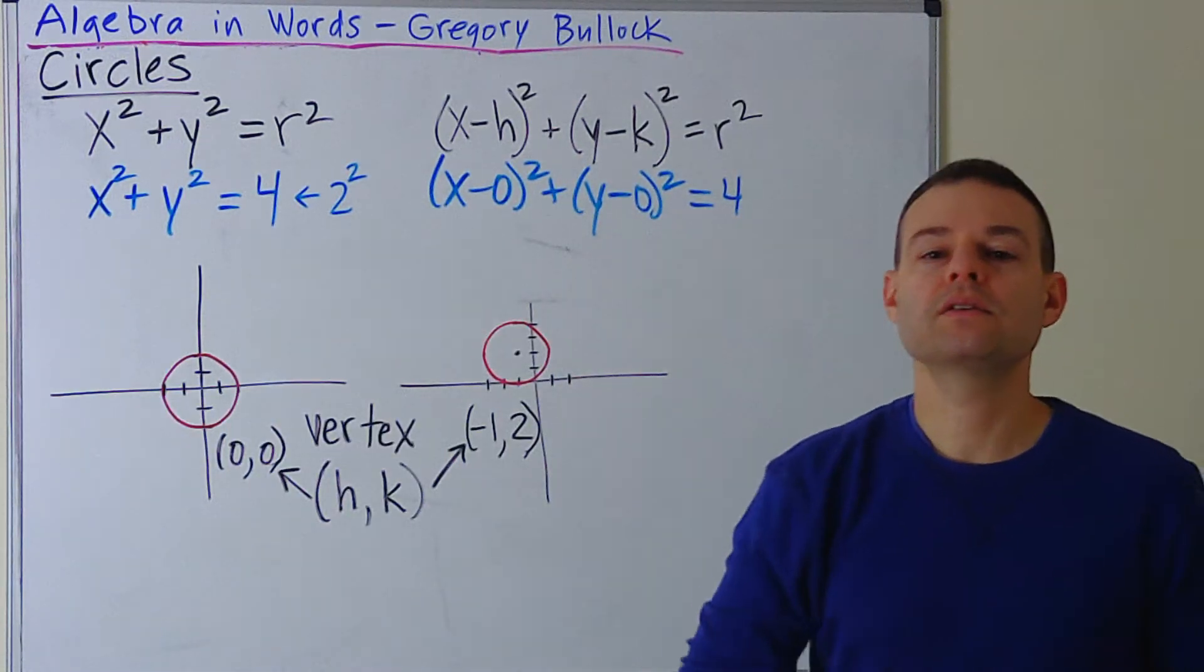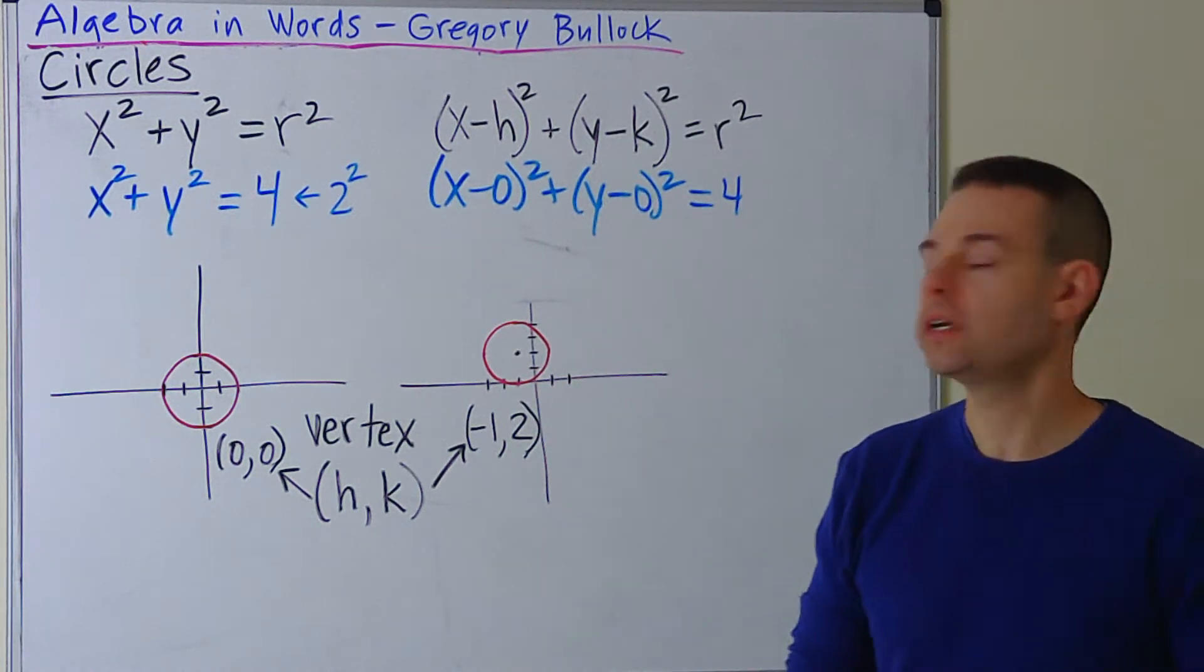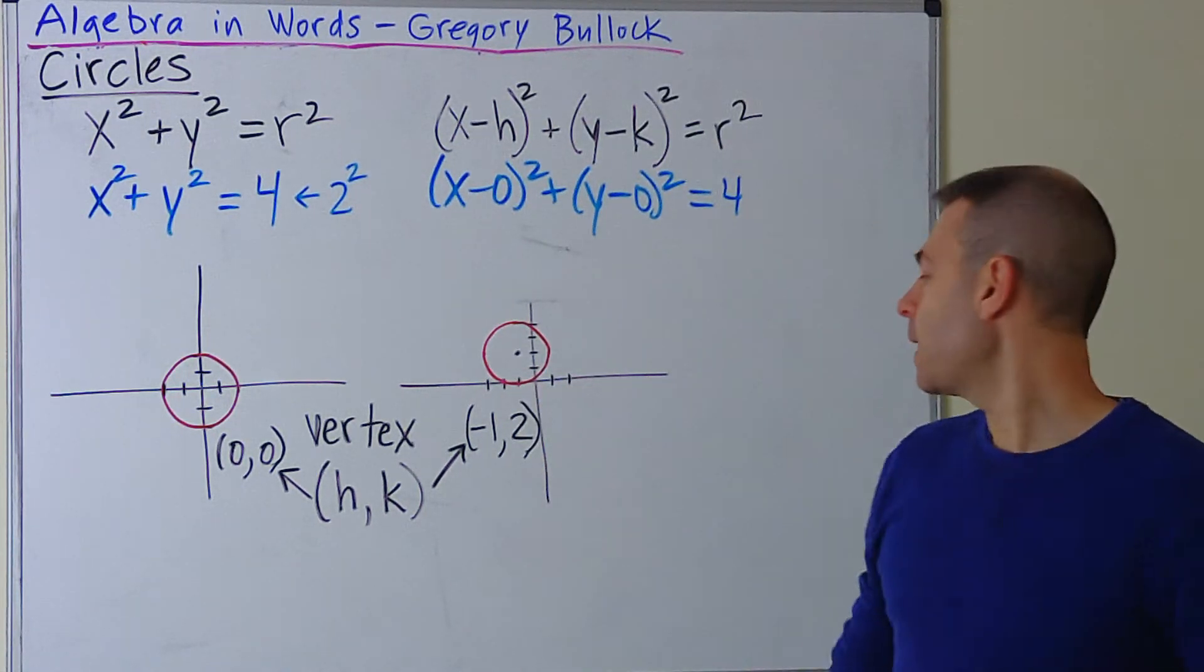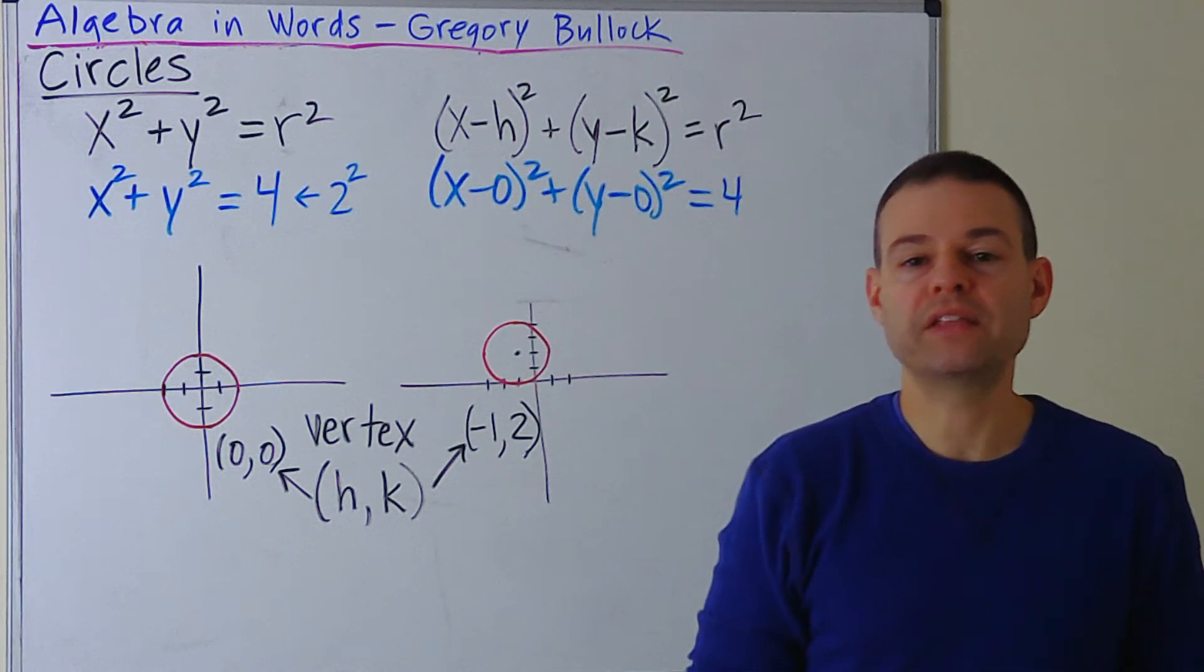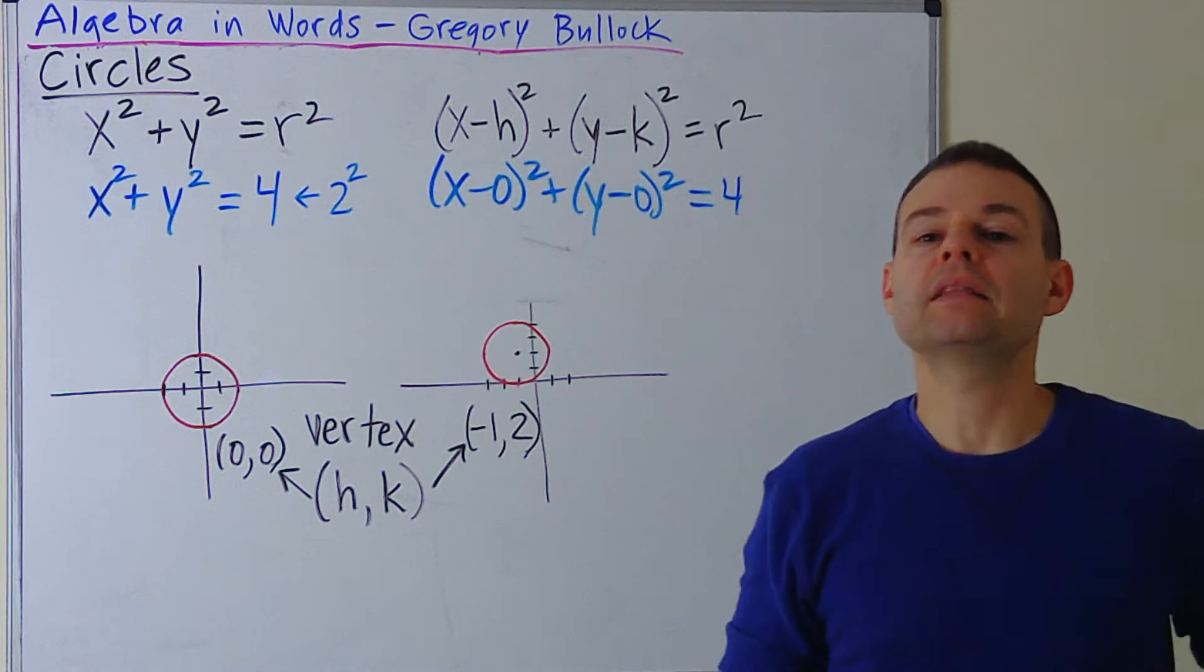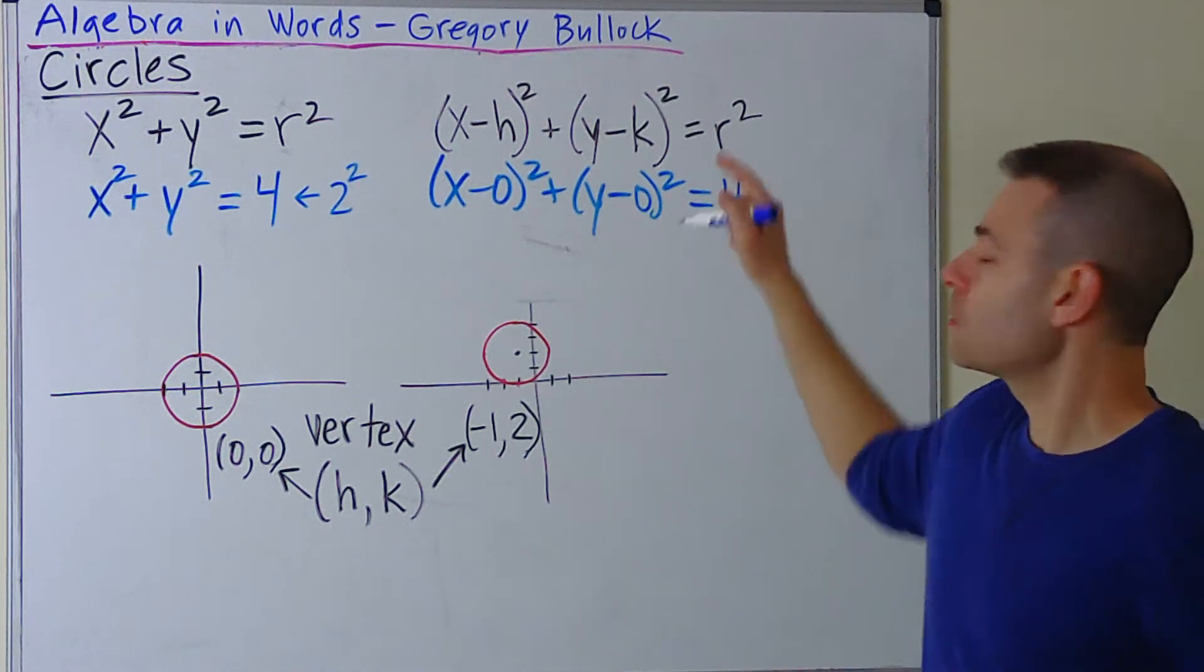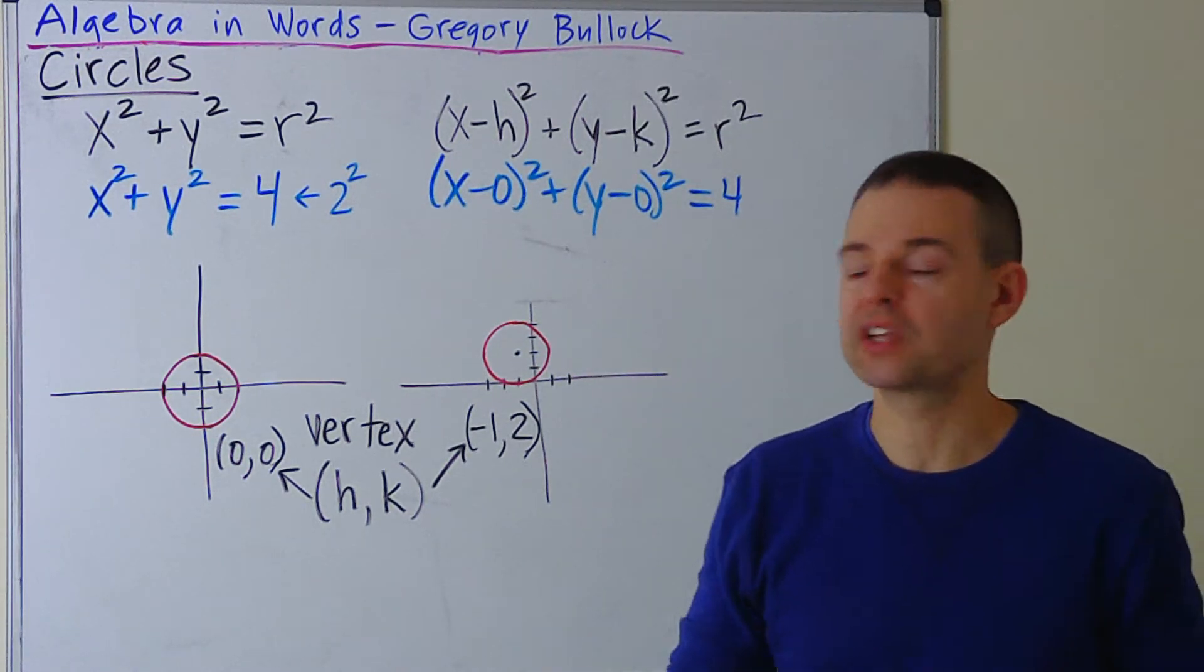But now let's consider a circle that does not have a vertex at the origin. It has a shift. And in this case, the vertex is -1 for h and 2 for y, or 2 for k. Now let's put that into the top standard form equation like we did for the first equation.